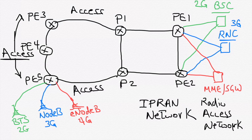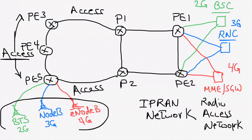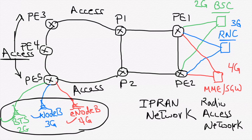MME and SGW handle and control 4G traffic. For the access side, we have BTS for 2G, NodeB for 3G, and E-NodeB for 4G. They are located in the access network and handle traffic coming from the user — the mobile terminal devices — which are associated to each site based on the type of mobile service: 2G, 3G, 4G, and even 5G.